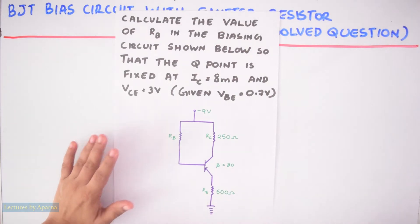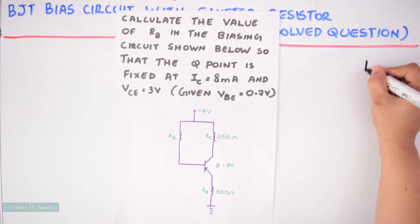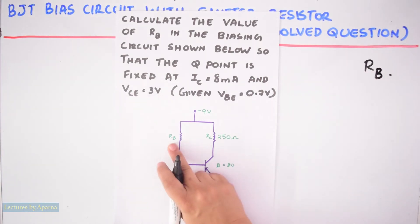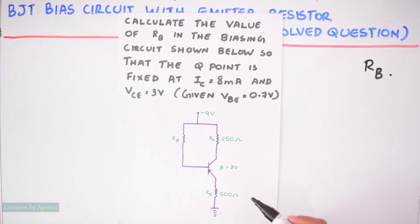So in this question we have to find the value of RB, our base resistor. We have to find the value of this RB. We should note that this is a PNP transistor and it is a negative voltage that is connected here, that is minus 9 volt.